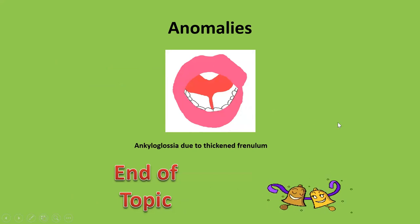The tongue tie may also occur superiorly, referred to as ankyloglossia superior, in which the tongue is bound to the palate — it is attached to the palate, which is another form of tongue tie. If you get a note on the development of the tongue, do mention the anomalies of the tongue also. With that, we come to the end of this topic.